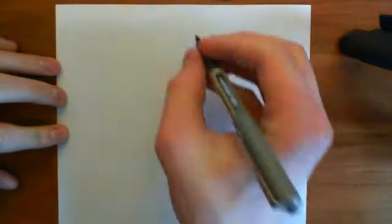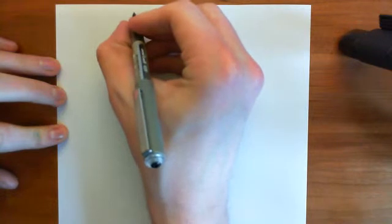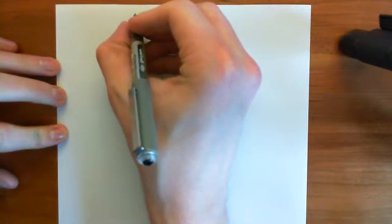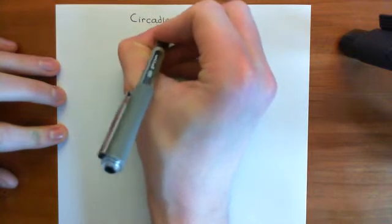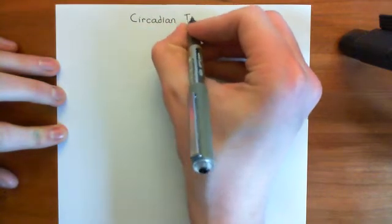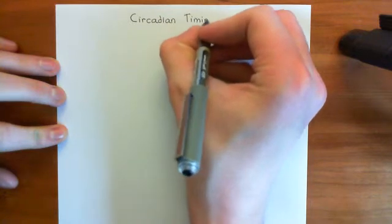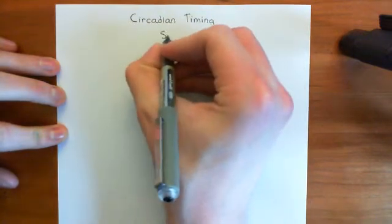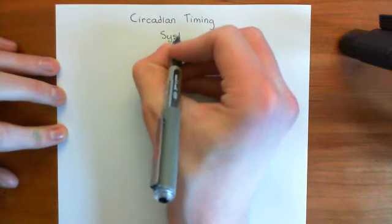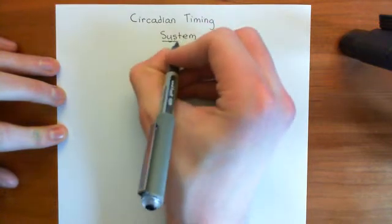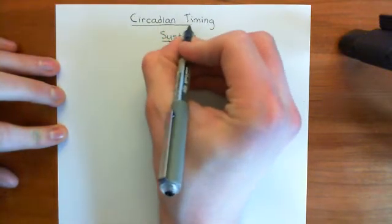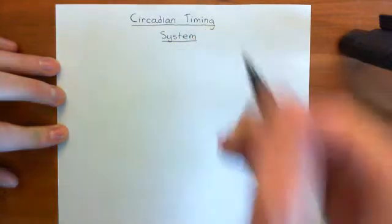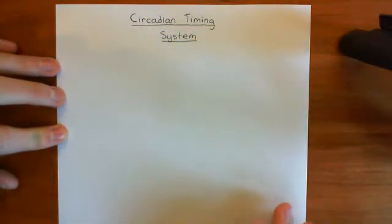Welcome to this video. In this video, what we're going to discuss is the mammalian circadian timing system. The structure for this video: we're going to start with a discussion of the circadian clock, then we'll discuss the master clock and how the master clock is entrained to the light-dark cycles that are around us. So we'll begin with what is a circadian clock, first of all.